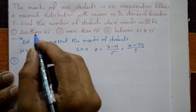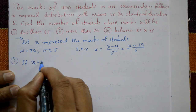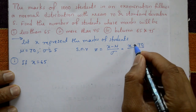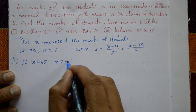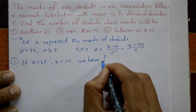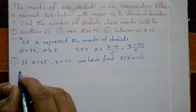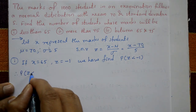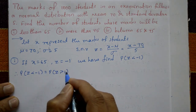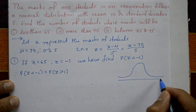Case 1: Find the probability of mass less than 65. If X = 65, then Z = (65 − 70) / 5 = −5/5 = −1. So we need to find P(Z < −1), which equals P(Z > 1) by symmetry of the normal distribution.